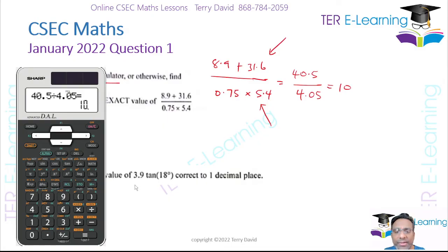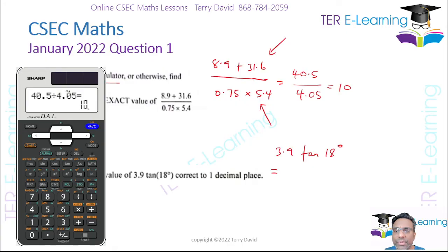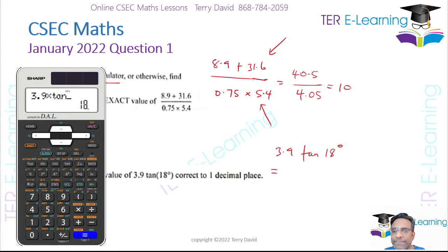The next thing we have to work out — they want us to find the value of 3.9 tan 18 degrees. Basically we can do this in one go on the calculator. I'm going to say 3.9 multiplied by tan 18, and that's going to give me 1.267.